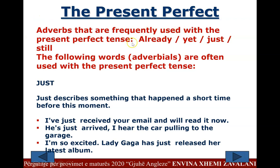Adverbs frequently used with the present perfect tense: already, yet, just, still. 'Just' describes something that happened a short time before this moment. Examples: 'I've just received your e-mail and will read it now.' 'He's just arrived — I hear the car pulling into the garage.' 'Lady Gaga has just released her latest album.'